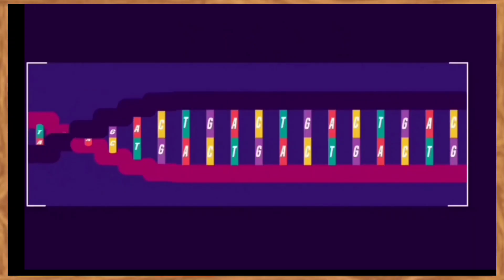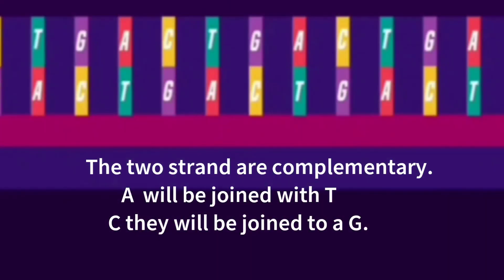The two strands are complementary. This means that whenever there is an A in one strand they will be joined with T in the opposite strand. And wherever there is a C they will join to a G.